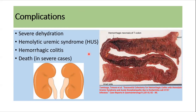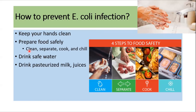The infection can become complicated, with patients developing severe dehydration, hemolytic uremic syndrome, hemorrhagic colitis, and in severe cases, death. E. coli infection can be prevented by keeping hands clean, preparing food safely, drinking safe water, and consuming pasteurized milk.